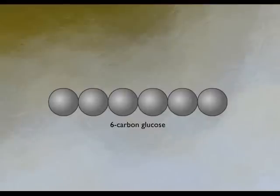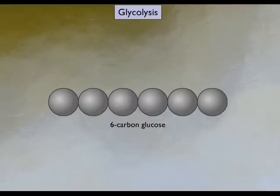Cells derive energy from the oxidation of nutrients such as glucose. The oxidation of glucose to pyruvate occurs through a series of steps called glycolysis. The energy released during these oxidation reactions is used to form adenosine triphosphate, ATP, the energy currency of the cell.